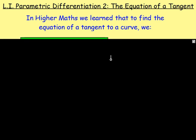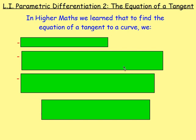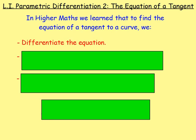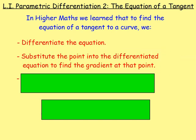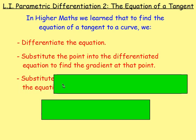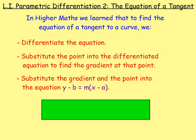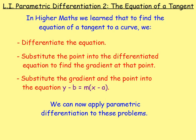To get the gradient, you would take the equation of the curve and differentiate it. You differentiate to get the gradient of a curve at a certain point. If we know the point, we can substitute that into the differentiated equation and that gives us the gradient. From there, you substitute the gradient and point into y minus b equals m bracket x minus a, the equation of a straight line. Now we're going to apply these problems to the parametric differentiation we were doing in the last lesson.